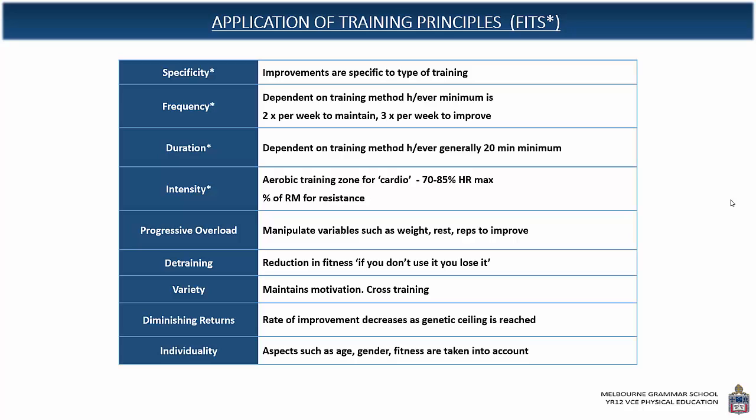Detraining — if you don't use it, you lose it. If you don't train for a particular fitness component, you will have a decrease in your ability to perform in that component. Variety is really important for maintaining motivation for an athlete. It works against specificity to a certain extent; however, if you're a swimmer, for example, swimmers don't just spend all their time in the pool because that would become monotonous and boring — so variety is good for motivation.